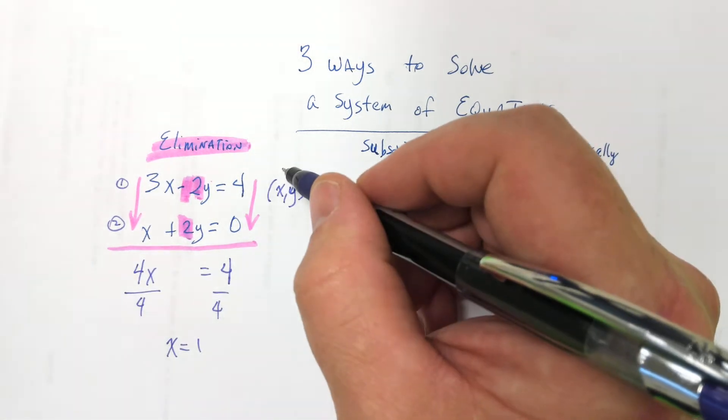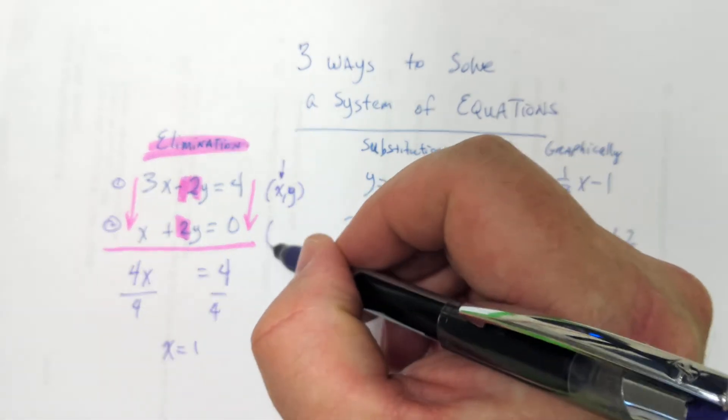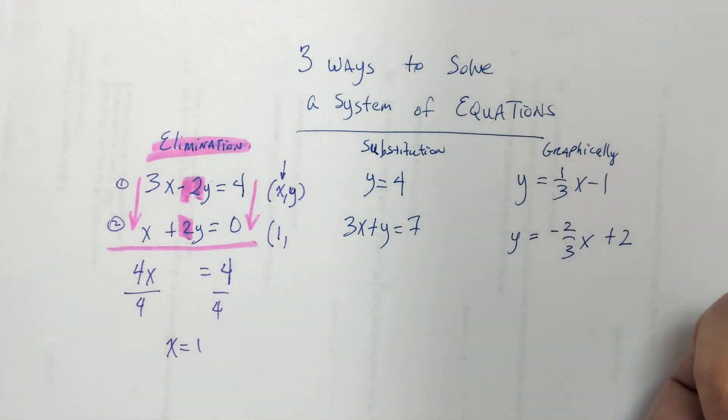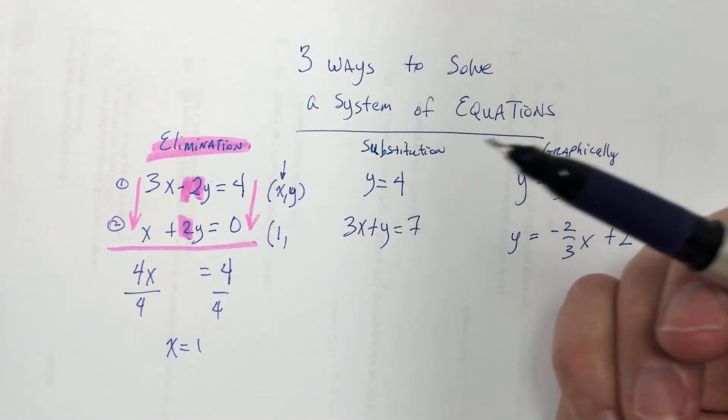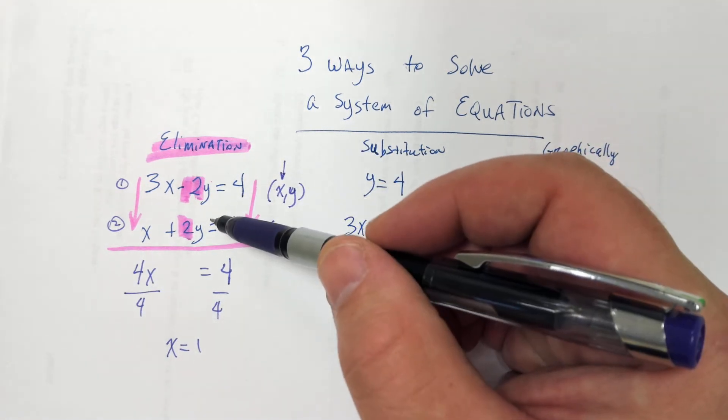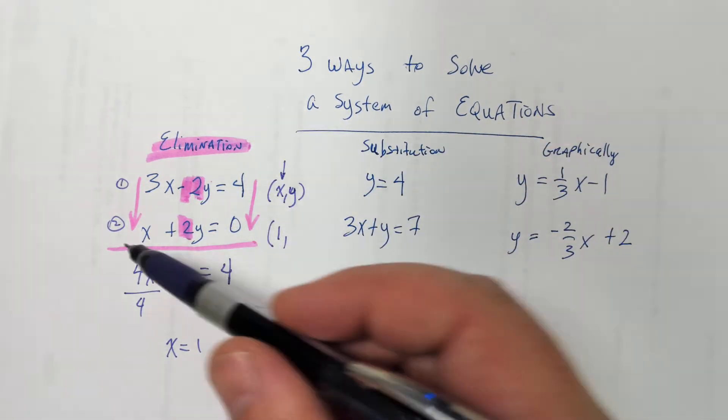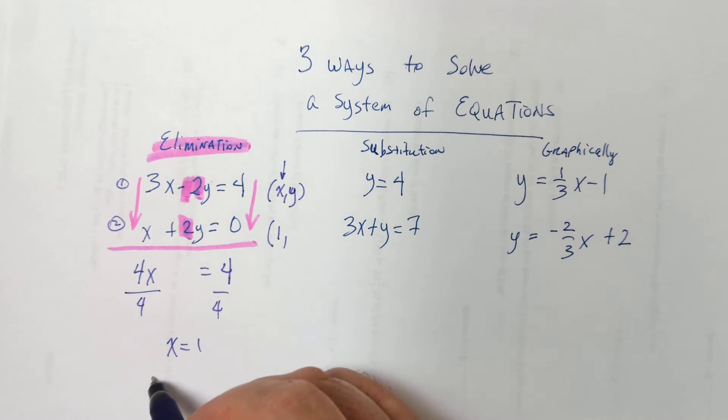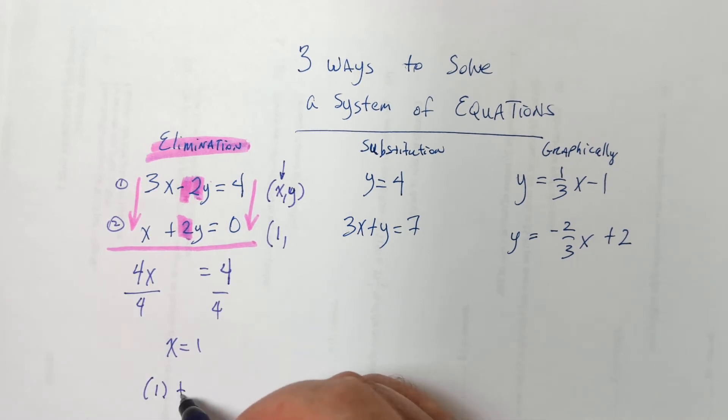So then, Jose, that means that x is 1. So I've got my first part of my answer at 1. And to figure out what y is, I've just got to plug it in. Just plug it in either way. I would plug it in the easier one. I think this is an easier equation. So, I plug in x as 1.